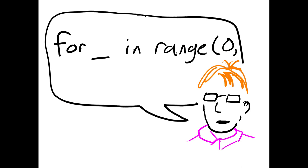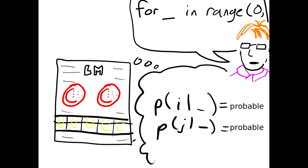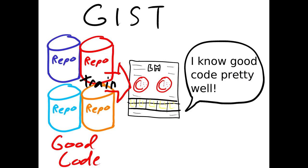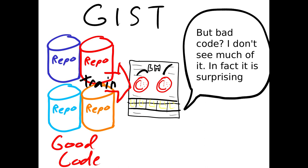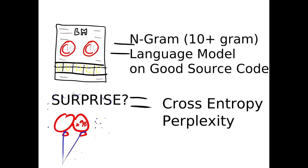If we do the same thing on program source code, 'for blank in range open paren zero comma', you probably are going to choose an I or J. Based on reading GitHub Python, you'd probably get the same results from a language model. But if I gave you 'for for in range', that would be confusing. In Python you're not allowed to have 'for' as an identifier; it's a reserved word.